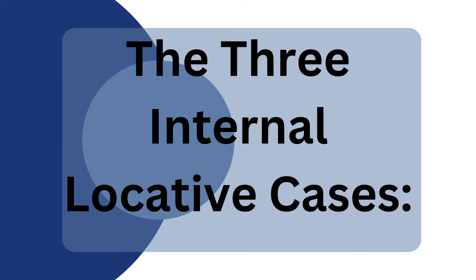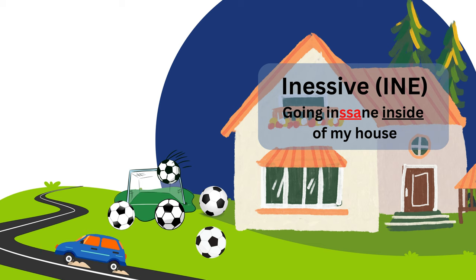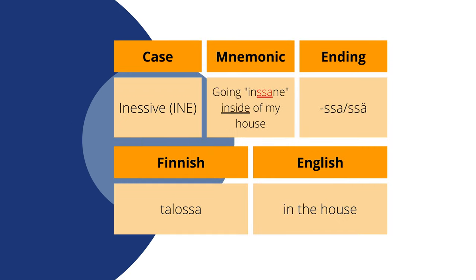Let's look at the three internal locative cases. The first case in our mnemonic is the inessive case. It refers to something being inside of something else. It can also refer to something happening within a period of time. It can also indicate that something is immediately next to something else. The example: imagine being inside of my house for so long that you're going insane inside of my house. If we spell 'insane' with two s's instead of one, we have the case ending for the inessive case, which is -ssa or -ssä. The chosen example is talossa, meaning 'in the house.'